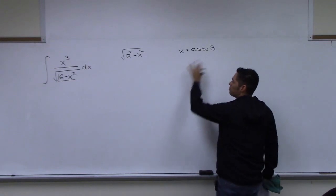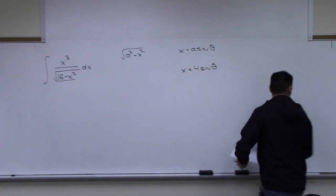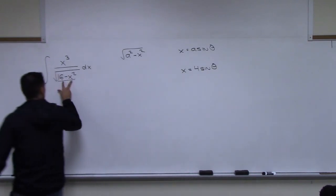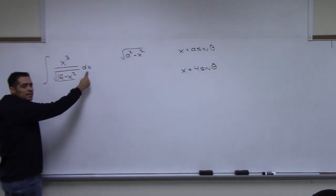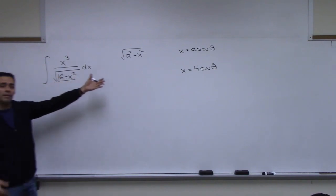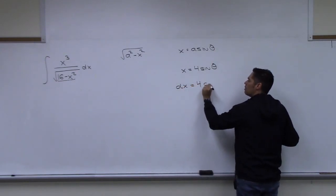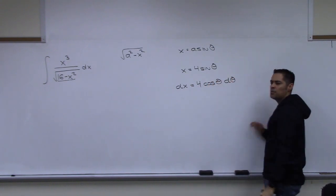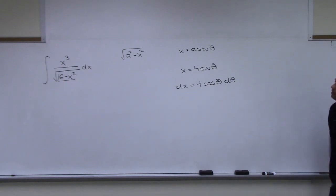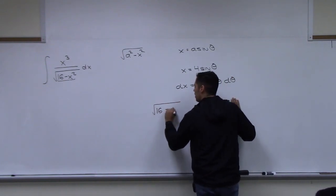If we switch to theta, we can't have dx either — we need to figure out what dx becomes. Taking the derivative: dx = 4 cos theta d theta. Then the last thing is figuring out what the radical √(16 − x²) turns into. From our earlier work, it becomes 4 cos theta.